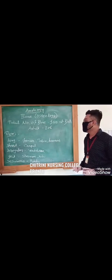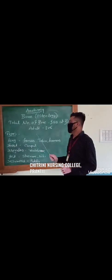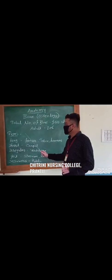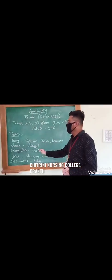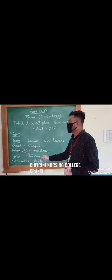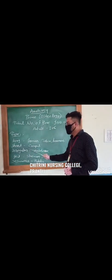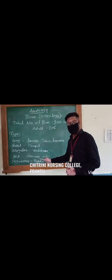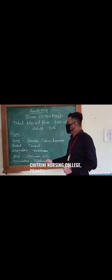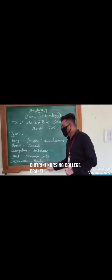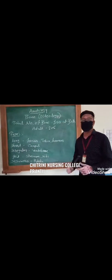How many types of bones are there? The first one is long bones, then short bones, then irregular bones, then flat bones, and sesamoid bones.